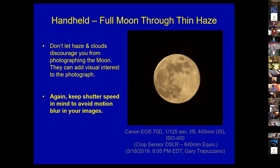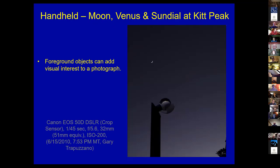Lean against your car or something nearby, put the camera right up to your face so your body and the object form one rigid assembly, then slowly press the shutter. Take multiple shots — digital film is cheap. Bracket your exposures: shoot one stop and two stops plus or minus in manual mode, then go back to your computer to pick the best image.